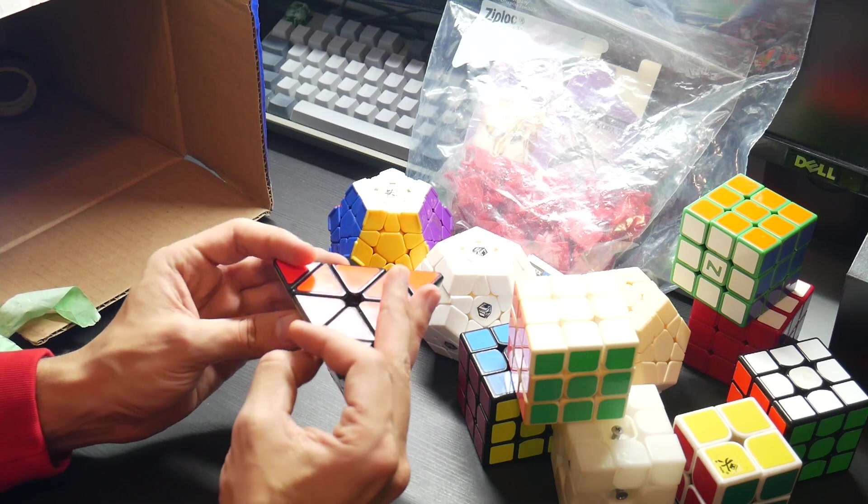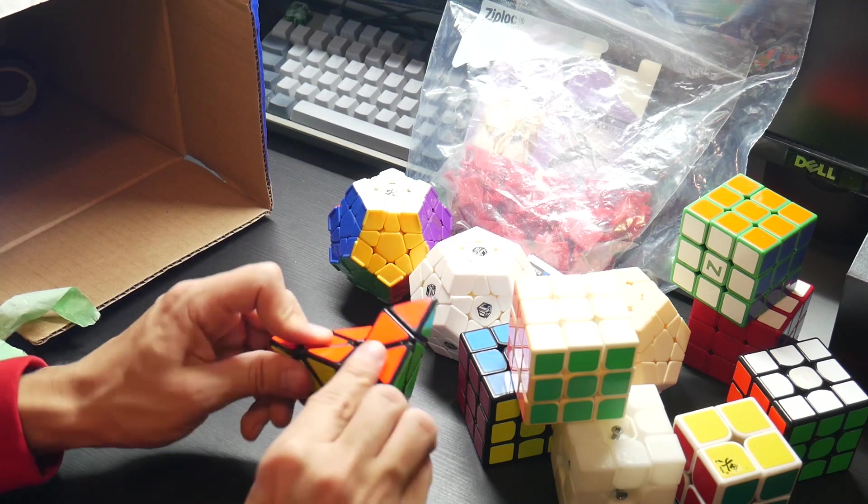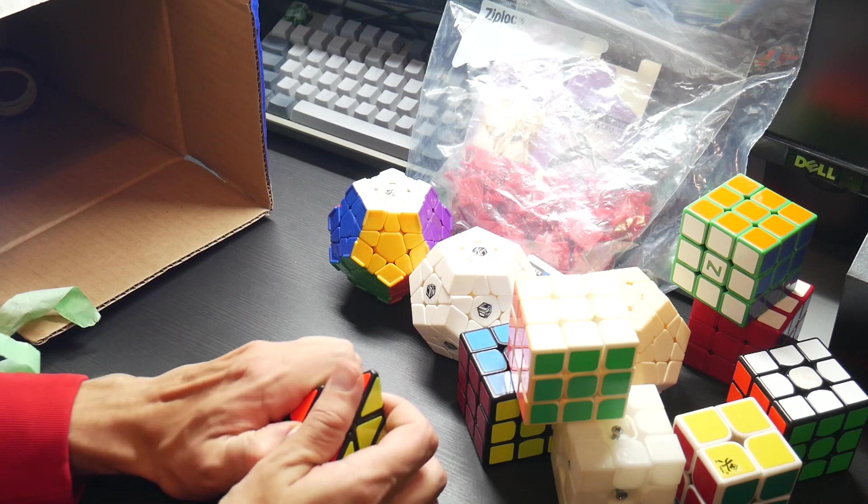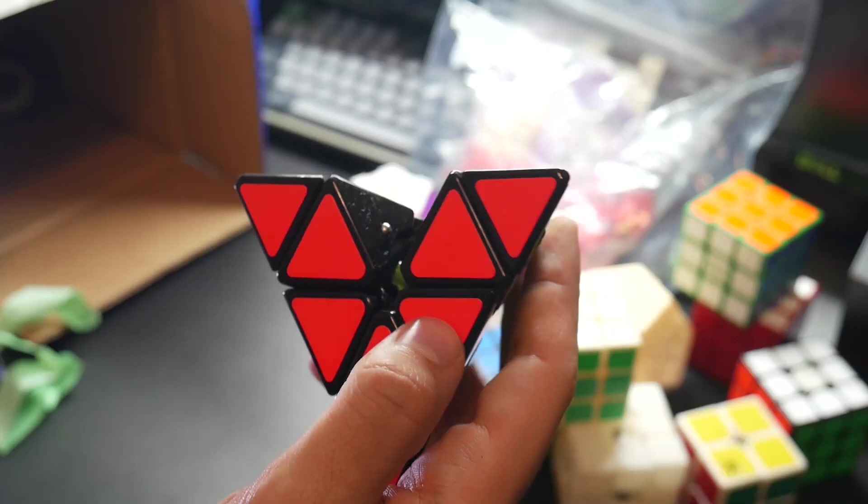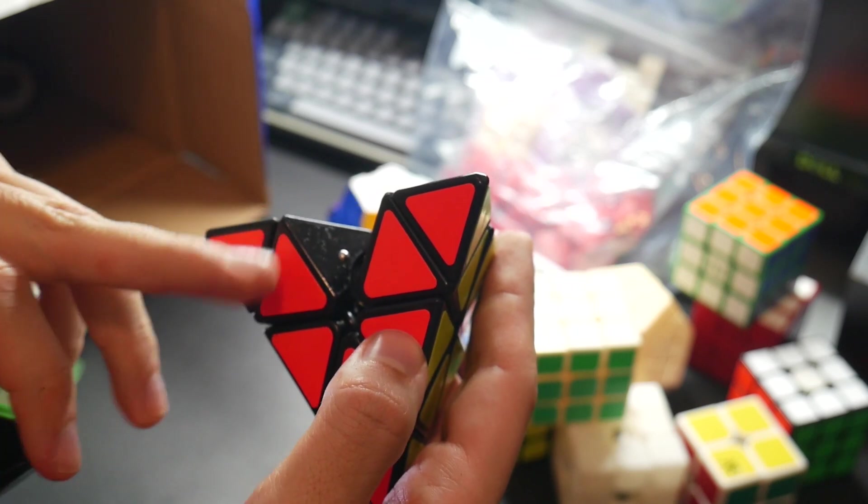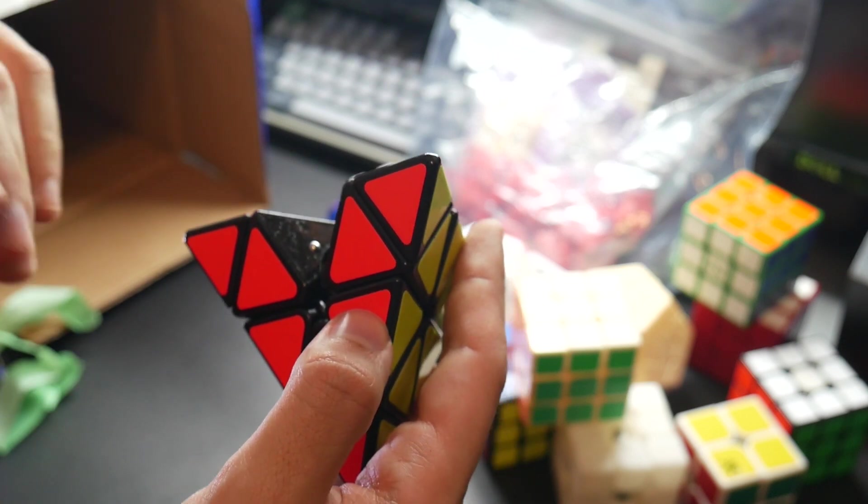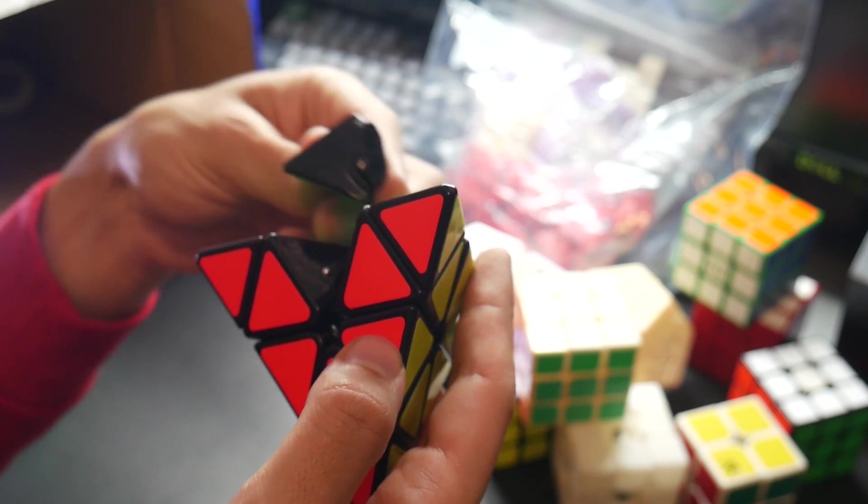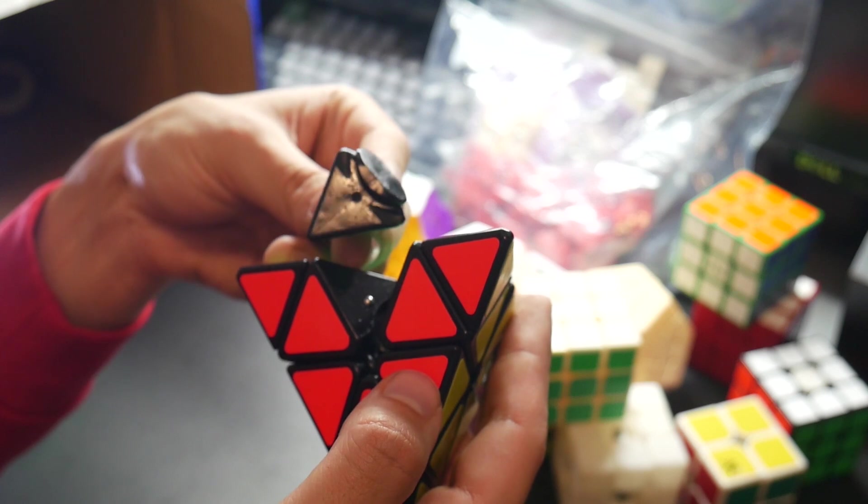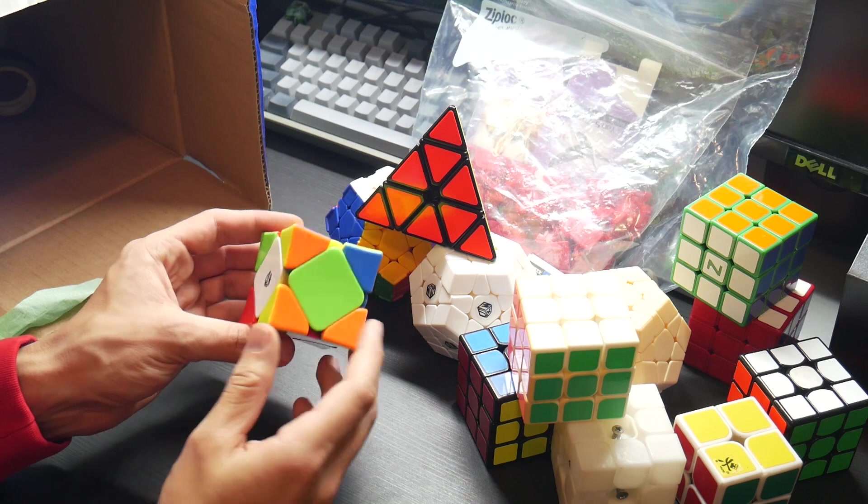All right, next up we got a pyraminx. Again, no logo. We got ball bearings though, so back in the olden days before Christian thought to put magnets in cubes, pyraminxes used ball bearings. I think Skewbs did as well to lock their turns into place. You'd have a little dimple in the cube there, in the edge piece, and that would click into place.